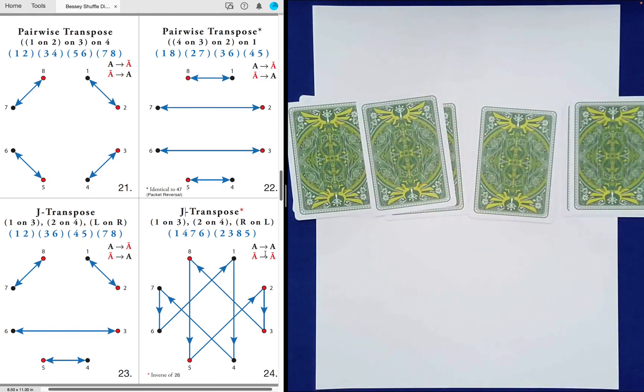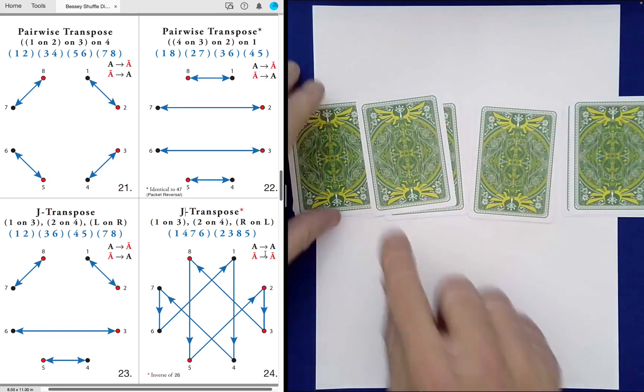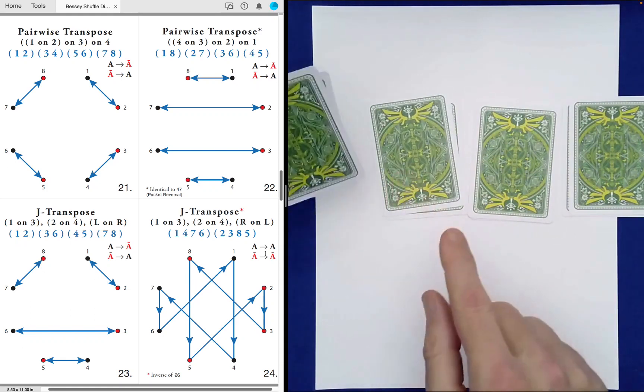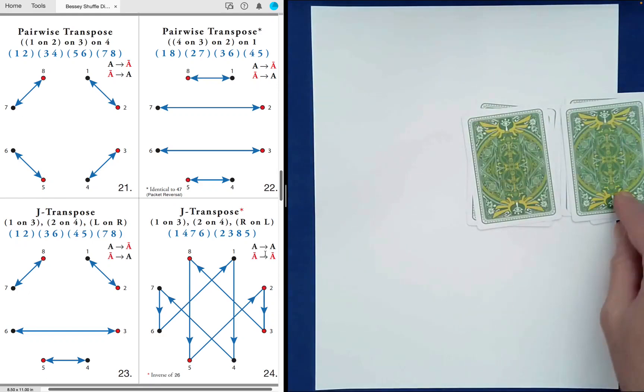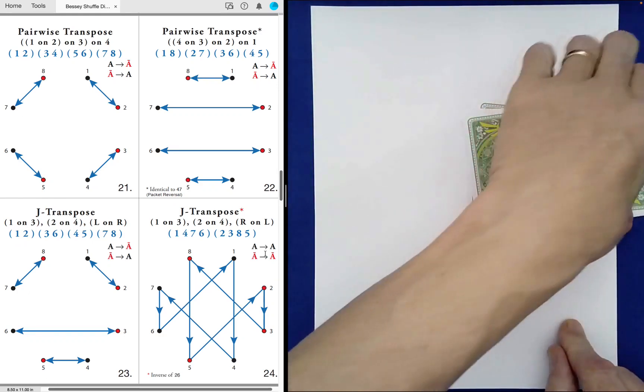And then 24, what are we doing? We're leapfrogging. We're doing one, stacking pile one on top of pile three, two on top of pile four, and then here, for shuffle 24, we're stacking the right pile on top of the left.